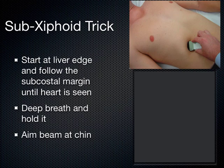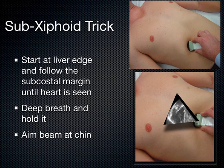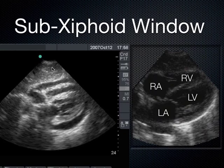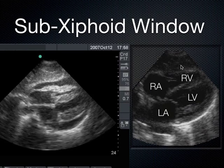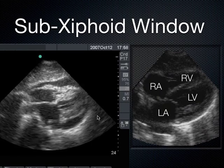The subxiphoid view is unique — even though the heart is on the left side, we don't aim towards the left. We use the liver as our window to see the heart, starting at the liver edge, moving up into the subxiphoid, and aiming the ultrasound beam at the patient's chin. If we aim left, we get the lung in the way and lose the image. You know you're looking at a subxiphoid view because the liver appears at the top of the screen. With the indicator to the patient's right, it's a four-chamber view: right ventricle, left ventricle, right atrium, left atrium.